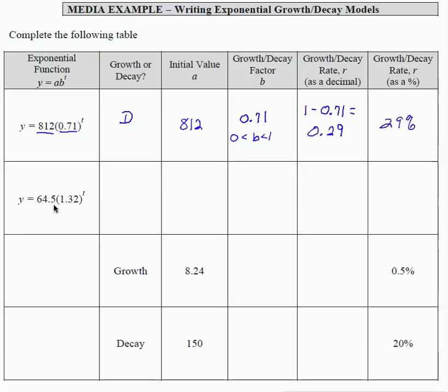Looking at the second row, again, I'm going to start with the b value, 1.32. And because b is greater than 1, that is a growth equation.